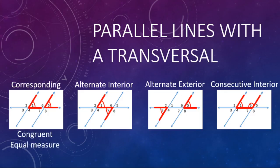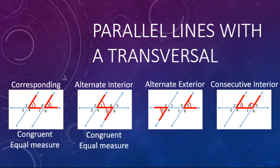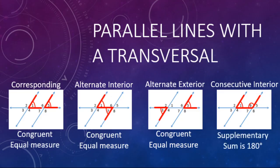Quick recap: Corresponding angles face the same way and are congruent. Alternate interior angles are inside the parallel lines and are congruent. Alternate exterior angles are outside the lines on opposite sides of the transversal and are congruent. Consecutive interior angles are inside the lines on the same side of the transversal — they make a U-shape and are supplementary, adding up to 180 degrees. Subtract from 180 to find the missing angle.